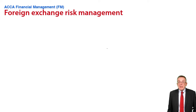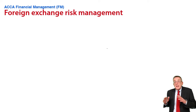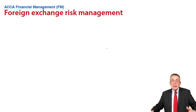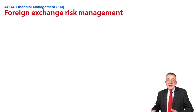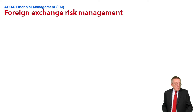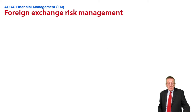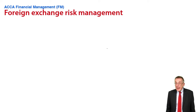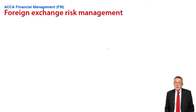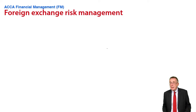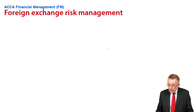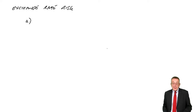Now let's look at the ways you're expected to be aware of for reducing and hopefully avoiding the risk of exchange rates changing between now and the date we either pay or receive the foreign currency. On the third page of the notes, in paragraph five, there's a list of ways you're expected to be aware of, albeit only two of them are you actually expected to be able to do calculations on. But all of them you are expected to be aware of. Running down the list, the first section covers what I think are very obvious ones.